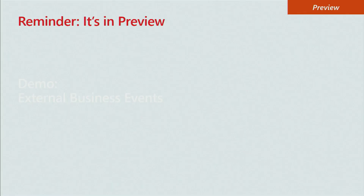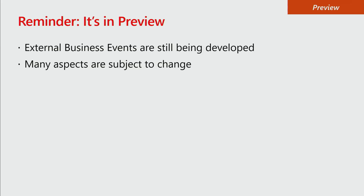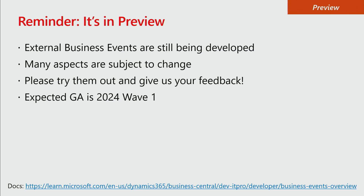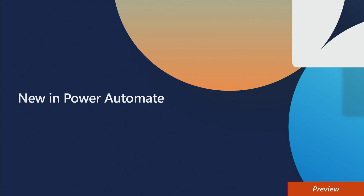Just a reminder that this is in preview — external business events are still being developed and many aspects are subject to change. Please try them out and give us your feedback. Our expected GA for this is 2024 Wave 1. You can join the discussions on Yammer and learn more at our documentation.